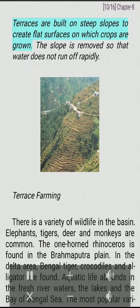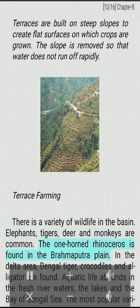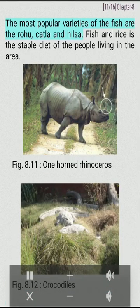Terraces are built on steep slopes to create flat surfaces on which crops are grown. The slope is managed so that water does not run off rapidly. There is a variety of wildlife in the basin. Elephants, tigers, deer and monkeys are common. The one-horned rhinoceros is found in the Brahmaputra Plain. In the delta area, Bengal tiger, crocodiles and alligators are found. Aquatic life abounds in the fresh river waters, the lakes and the Bay of Bengal. The most popular varieties of fish are the rohu, katla and hilsa. Fish and rice is the staple diet of the people living in the area.